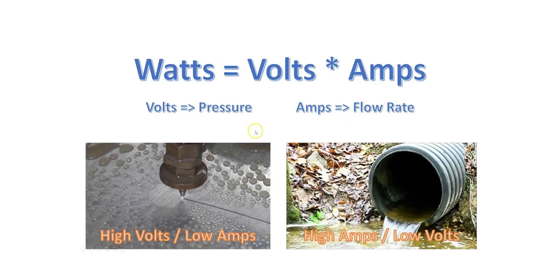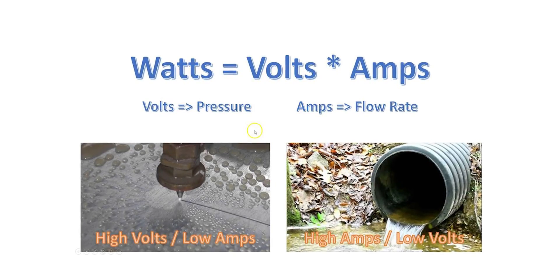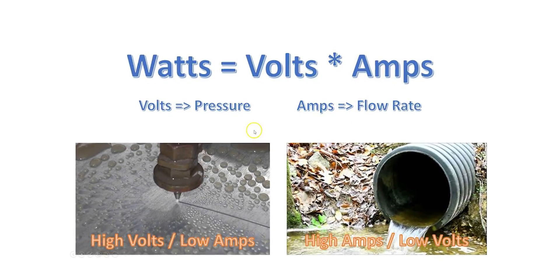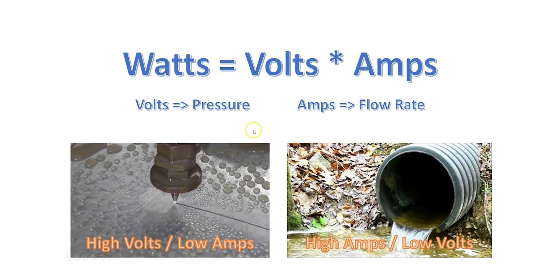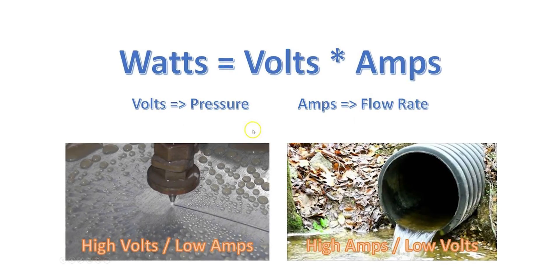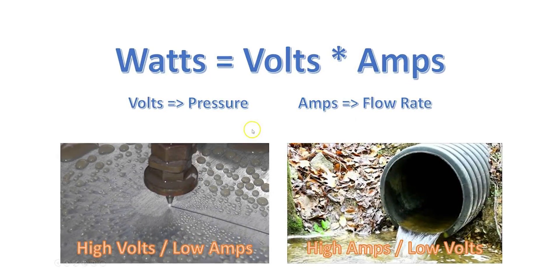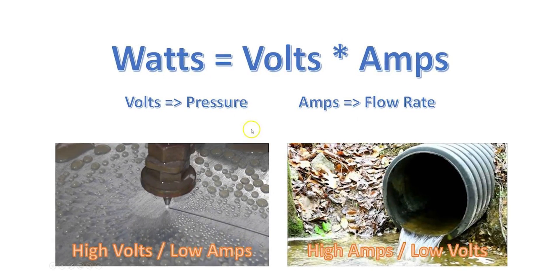If you've got current and voltage, you get power, and this power is measured in wattage or watts. Since power is a product of voltage and current, an increase in either one leads to an increase in overall power output. This is why we multiply the volts and amps to get the total watts.